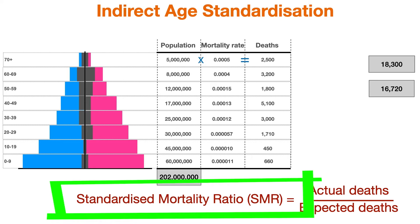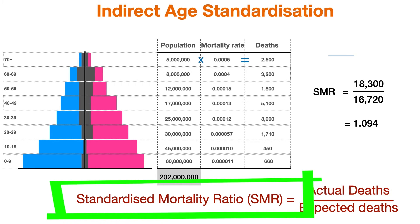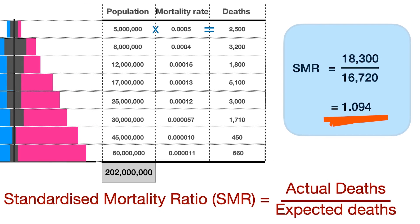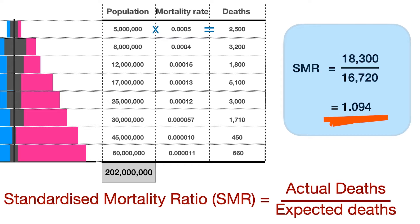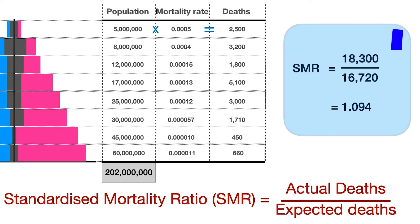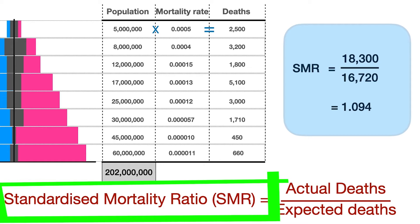We can look at the ratio of the actual over expected deaths, and this is called the standardized mortality ratio, or SMR. In this case, the SMR is 1.094. If it was exactly one, that would mean the actual and expected deaths were exactly the same. The fact that it's more than one means that the age-adjusted mortality rate in Ireland is higher than for Europe as a whole. And if it was less than one, Ireland would have an age-adjusted mortality rate lower than for the whole of Europe. We can apply the same technique to other European countries and compare their SMRs to see who is doing better.